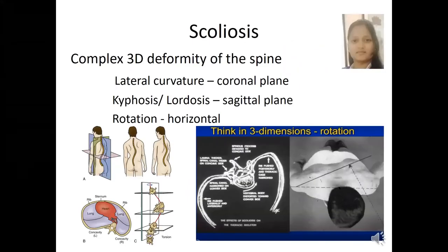Scoliosis is usually defined as a lateral curvature of the spine, but it is a complex deformity which involves all three planes: coronal, sagittal, and horizontal. To get the overall picture of scoliosis and to plan your treatments, a basic understanding of abnormal structural changes in all these three planes is of utmost importance.